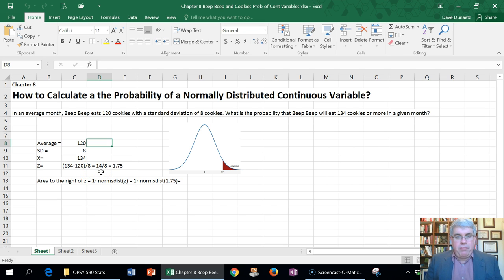So we want to know the probability that he eats 14 more cookies than average when the standard deviation is eight. And so 14 divided by eight comes to 1.75.